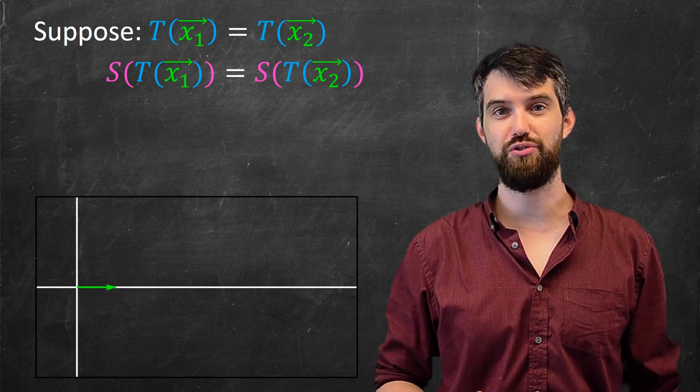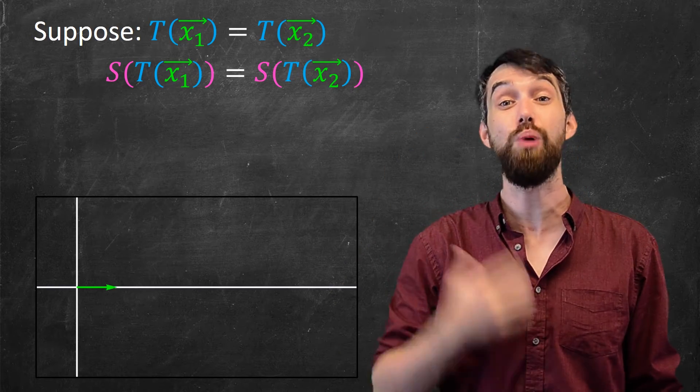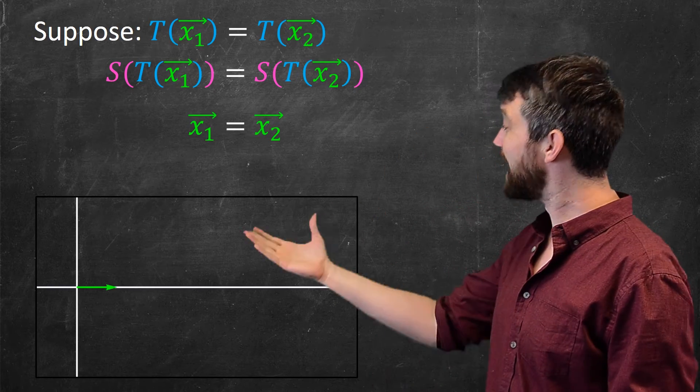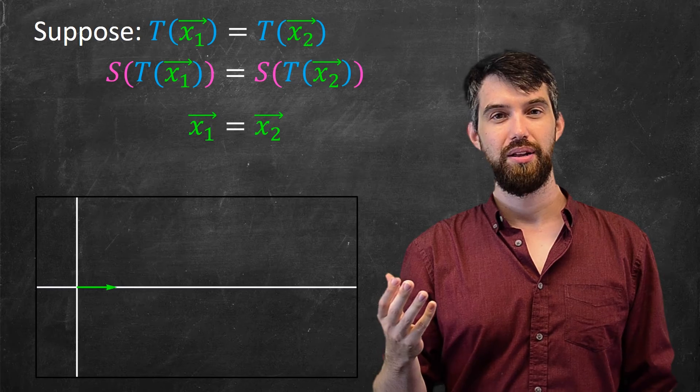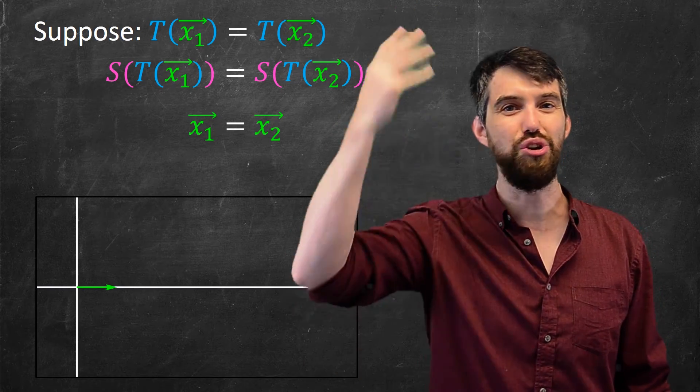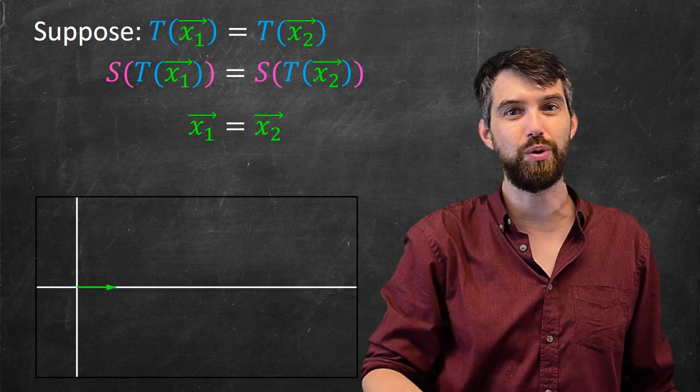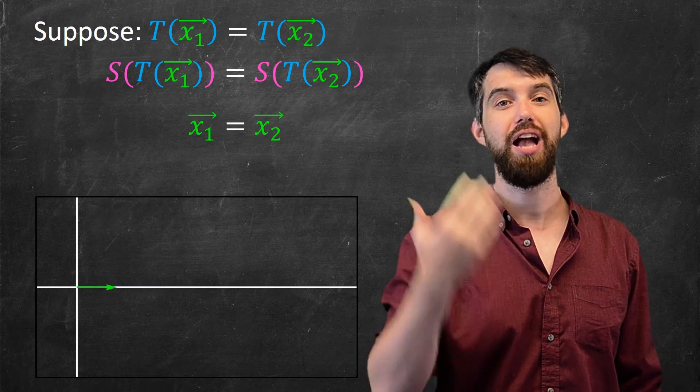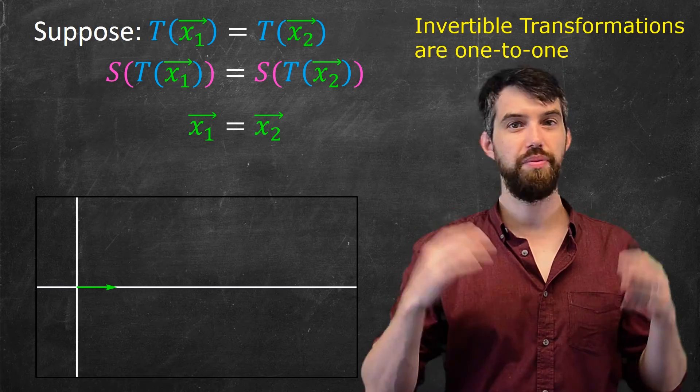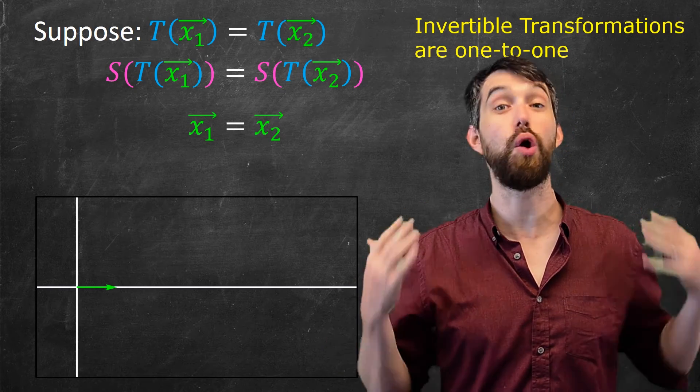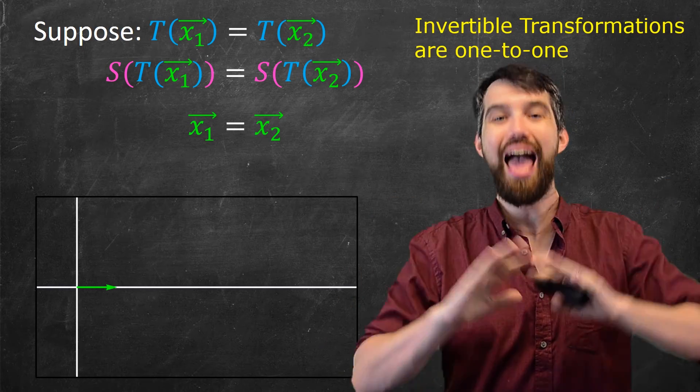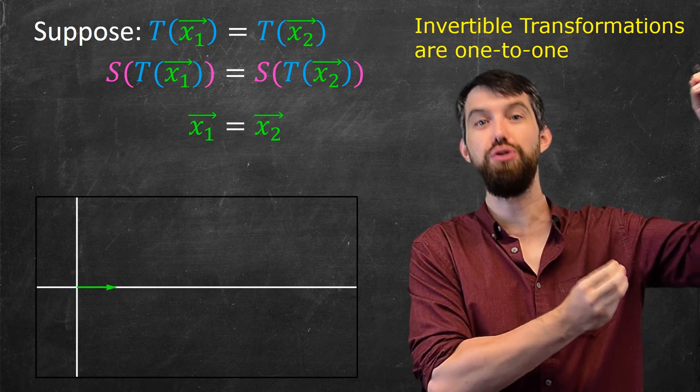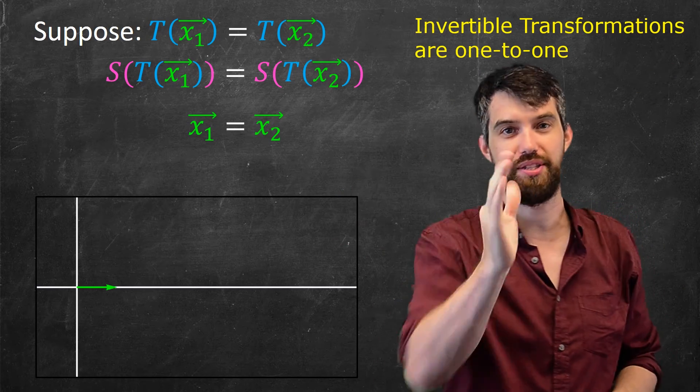That's what it means to be an invertible transformation. So if S indeed was the inverse, what you get was that X1 is equal to X2. But in our example, all the X1 and X2 and X3 and X4 and X5, all of those were different. So indeed, it's not possible to have such an invertible transformation. That is, invertible transformations are all one-to-one. You cannot have it be invertible if you've got a situation where two different vectors collapse down onto the same vector.